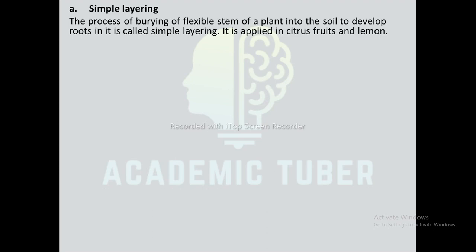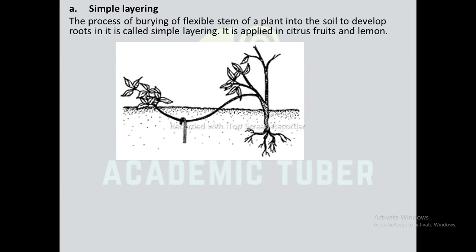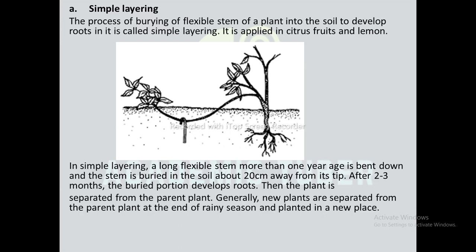Simple layering: The process of burying a flexible stem of a plant into the soil to develop roots in it is called simple layering. It is applied in citrus fruits and lemon. A long flexible stem, more than one year of age, is bent down and the stem is buried in the soil about 20 cm away from its tip. After 2 to 3 months, the buried portion develops roots. Then the plant is separated from the parent plant, generally at the end of the rainy season, and planted in a new place.